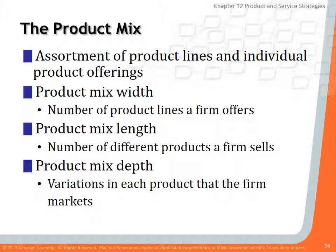Product mix length refers to the number of different products a firm sells — so from Tide to Duracell to Crest to Luvs, all products that P&G sells. Then there's product mix depth, which looks at one product line and all the different variations within it. For example, within Tide you have Tide powder with different scents, with bleach and without bleach; Tide liquid with the same variations; and more recently Tide Pods, where you just drop a small square into the washer without worrying about measuring. That's an example of product mix depth.